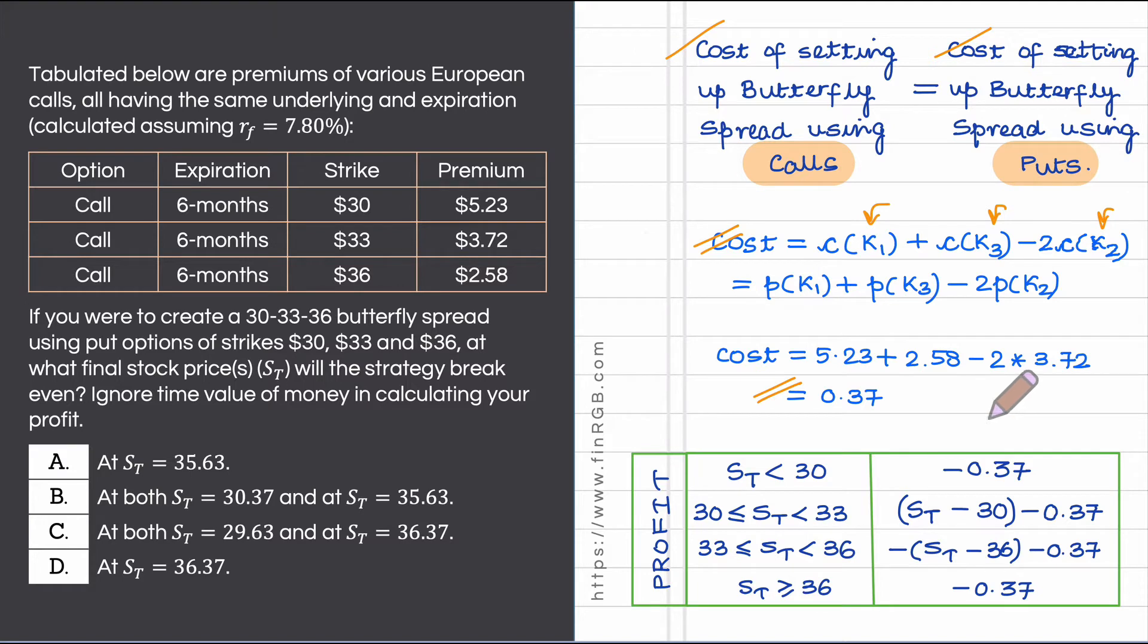To work out the S sub t at which break even happens we need to write down or we need to figure out how our profit depends on this S sub t. Please note that there are three strike prices involved: 30, 36 and 33. These three strike prices, they actually break down the interval within which this S sub t can lie into four sub intervals.